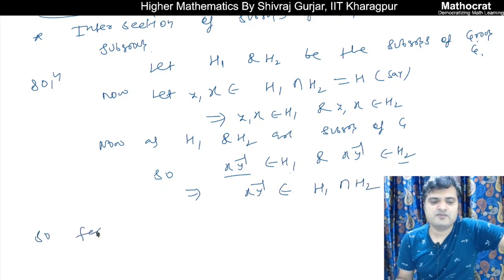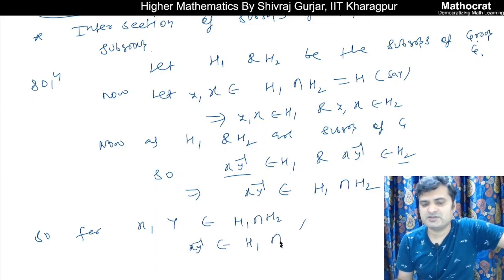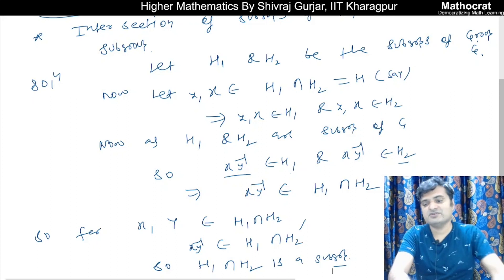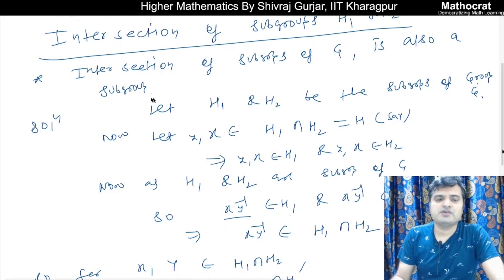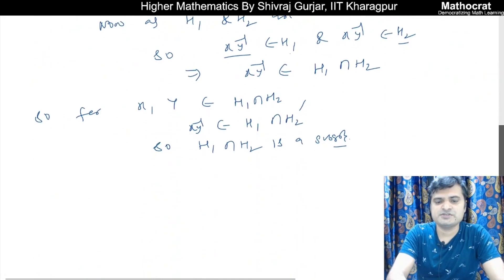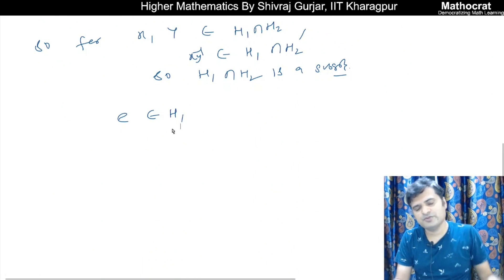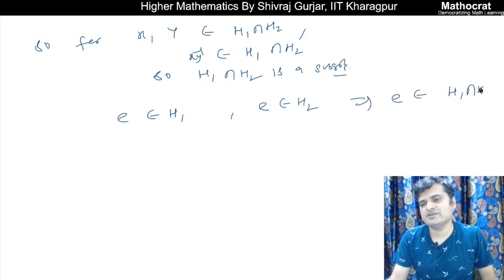For X, Y belonging to H1 intersection H2, XY⁻¹ belongs to H1 intersection H2. So H1 intersection H2 is a subgroup. For that, we also have to show that H1 intersection H2 is non-empty. We can say that the identity element E belongs to H1 intersection H2, which implies that H1 intersection H2 is a non-empty set.